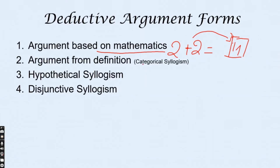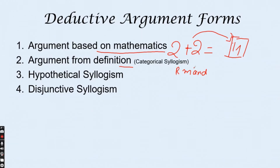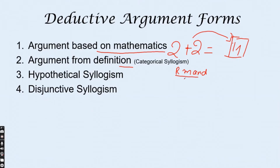The next deductive argument form is the argument from definition, where the conclusion depends merely on the definition of some word or phrase. For example: Raavan is mendacious. Mendacious means someone who lies. Therefore, it follows that Raavan tells lies. The conclusion is drawn directly from the meaning of the word 'mendacious' — that is an argument from definition.